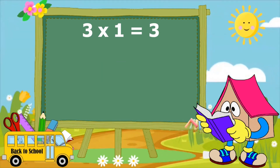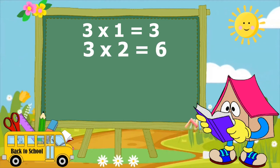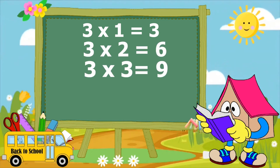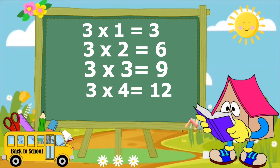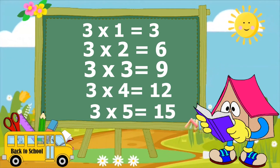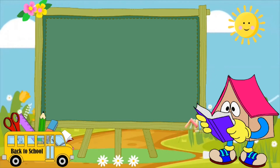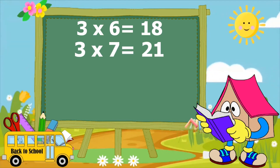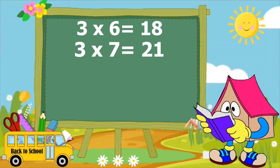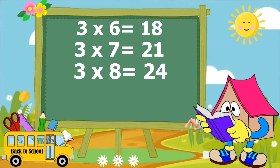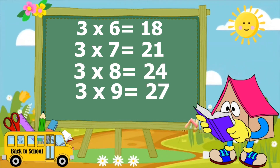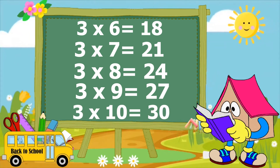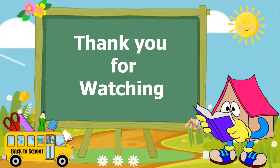3×1 is 3, 3×2 is 6, 3×3 is 9, 3×4 is 12, 3×5 is 15, 3×6 is 18, 3×7 is 21, 3×8 is 24, 3×9 is 27, 3×10 is 30.